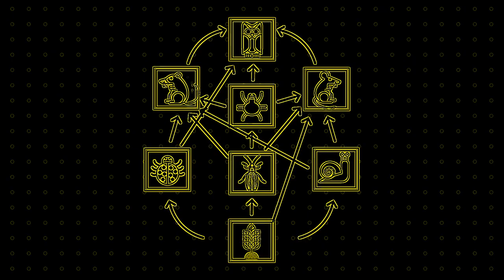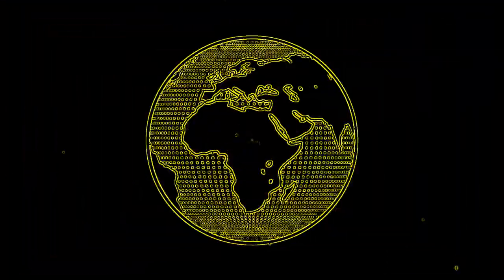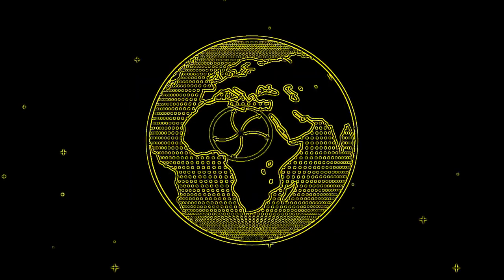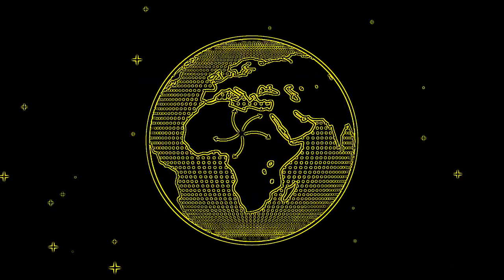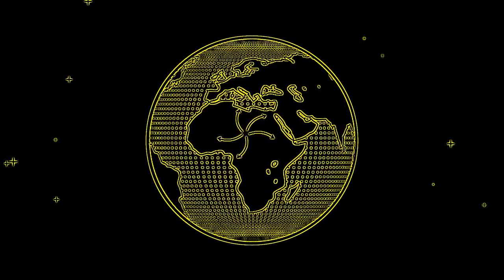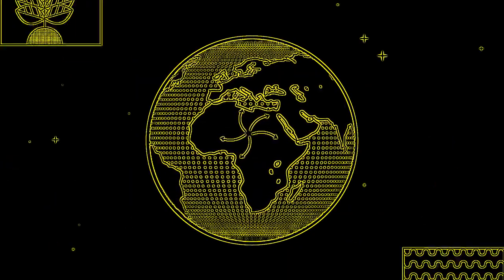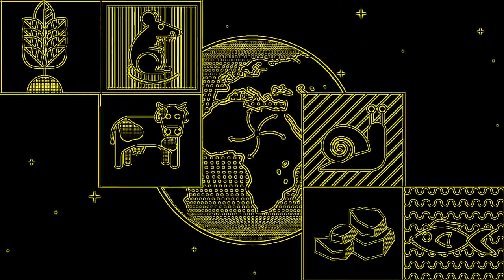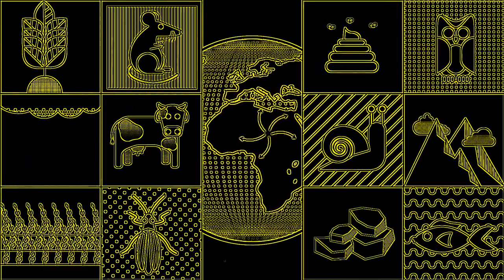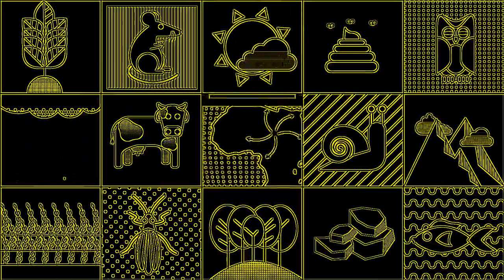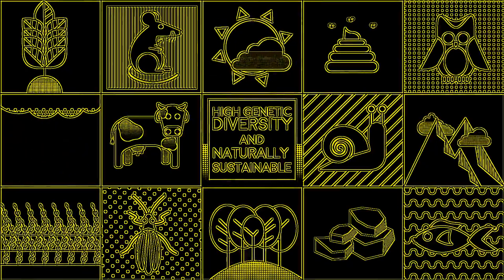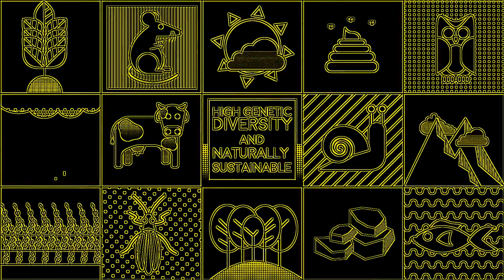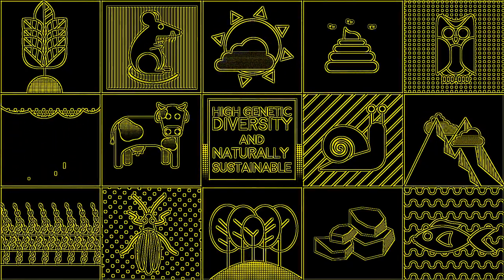Sometimes these webs contain over a hundred different components and span thousands of kilometers. Overall, natural ecosystems consist of many species of plants and animals, and have long and complex food webs and high genetic diversity. They are also naturally sustainable.